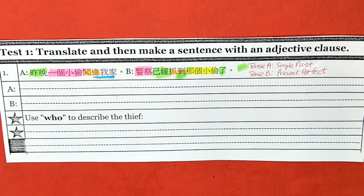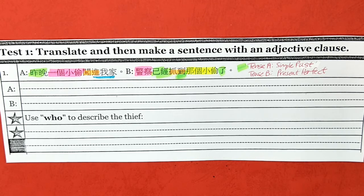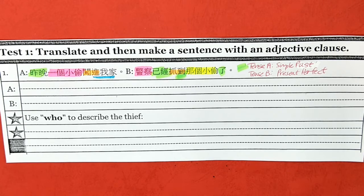Let's begin. Sentence one: color the verb, the subject, the object. Use your green to mark the key words for the verb tense. Sentence A's tense is simple past. The verb tense for sentence B is present perfect.